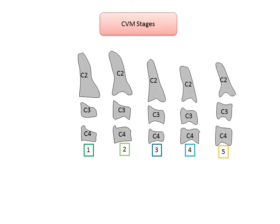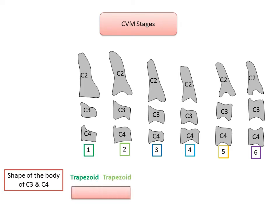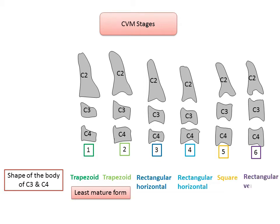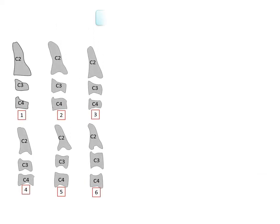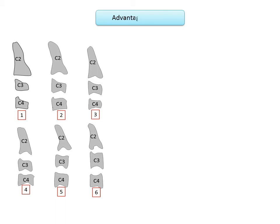This is a comparison of the shapes of C3 and C4 through the six CVM stages. In the first stage, the shape of C3 and C4 is trapezoid — the least mature form. The shape progresses to rectangular horizontal by the third and fourth stages. By the fifth stage, the shape becomes square. Finally, in the sixth stage, the bodies of C3 and C4 become rectangular in a vertical direction, which is typical of adult life.